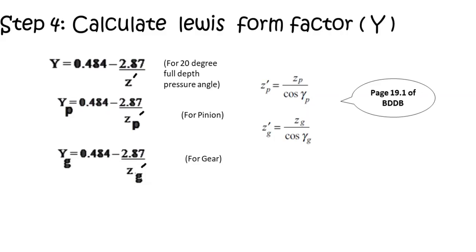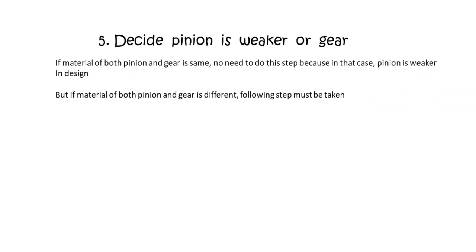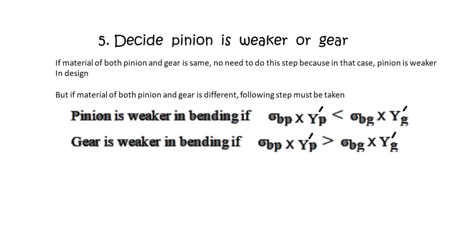Remember, Z-dash-P = ZP upon cos(γP) and Z-dash-G = ZG upon cos(γG), where γP and γG are your pitch angles. Step 5: Decide whether the pinion or gear is weaker. If the material is the same, the pinion will be weaker. If materials differ, compare σBP × Y-dash-P versus σBG × Y-dash-G — whichever product is lesser, that component is weaker in design.